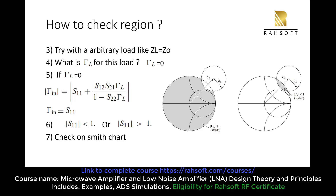Remember that gamma_in is equal to a specific formula. To find the stable region, we would normally set gamma_L to 0 by making ZL equal to 0 — picking the impedance from the center of the Smith chart. But here, we don't have to do any of that, because S12 is already 0. So the second term is always going to be 0.